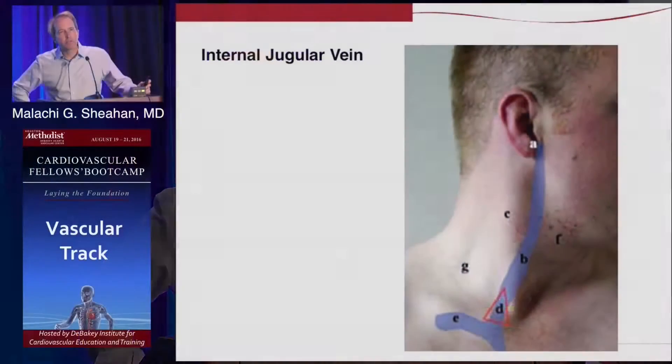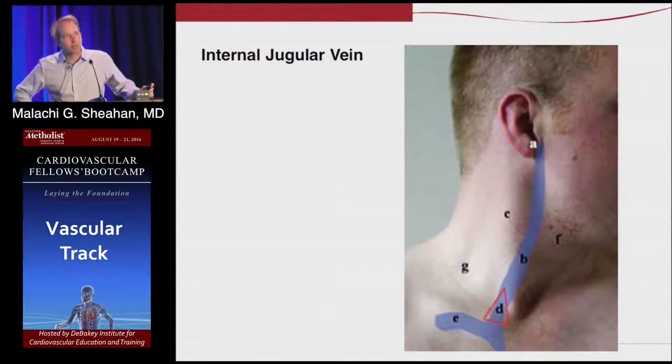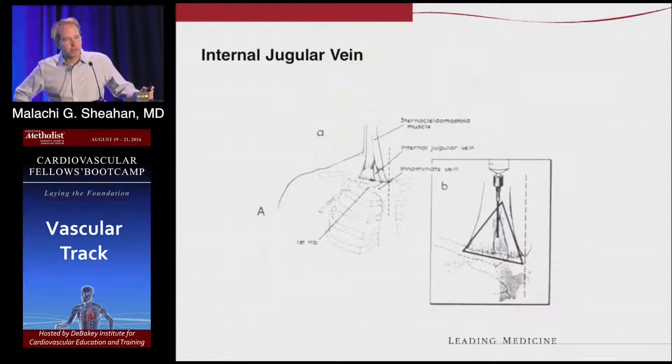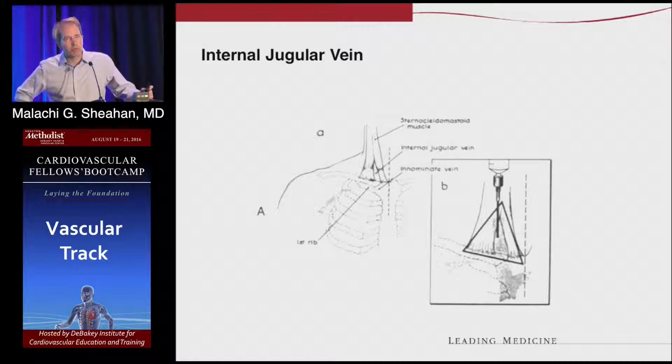Some of you did the carotid subclavian exposures with me on Thursday. You know there are two bellies of the sternocleidomastoid: the sternal head and the clavicular head. What we used to do to find the internal jugular vein is split right in between the two bellies. You can see the little split here, and what it does is form a triangle — the so-called safety triangle we would access before there were ultrasounds everywhere.